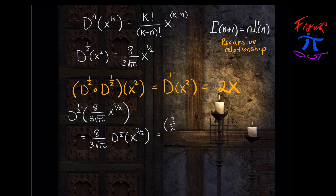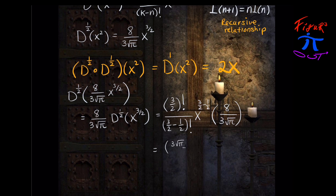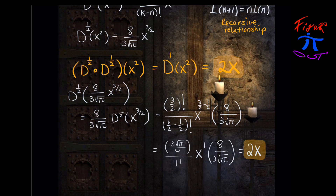We can pull the constant 8 over (3√π) out, and plugging into our formula from above, we'll have to evaluate (3/2)-factorial again. That gives us a value of 3√π over 4, divided by 1-factorial, times x to the first power, times that constant 8 over (3√π). With cancellation, we get 2x. So it worked — the half derivative formula for x to a power works out nicely.